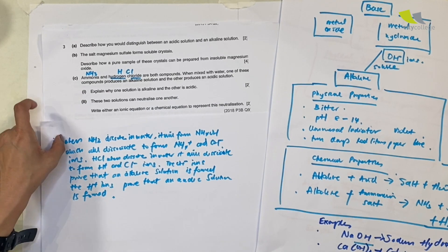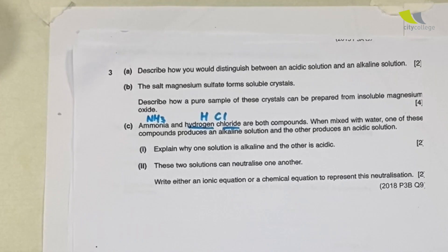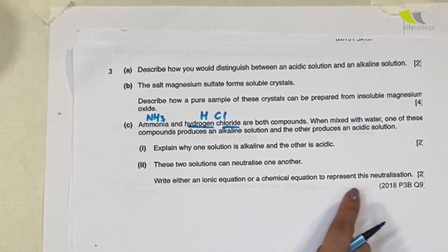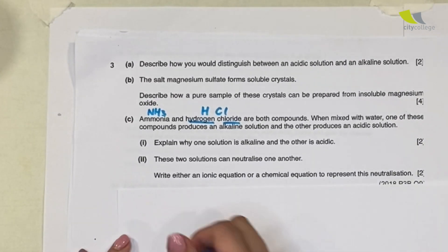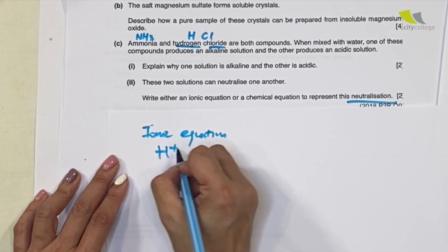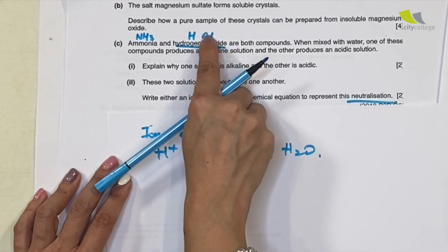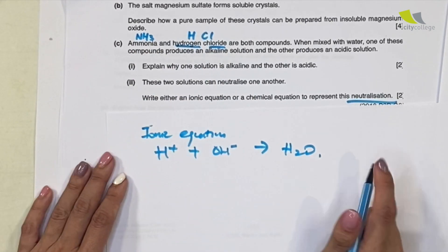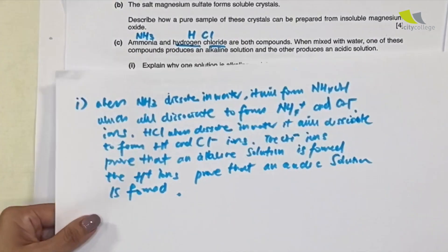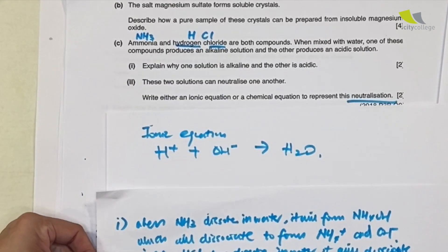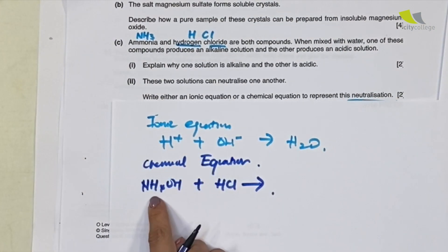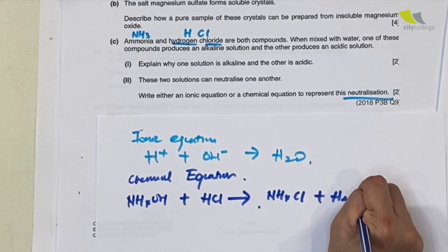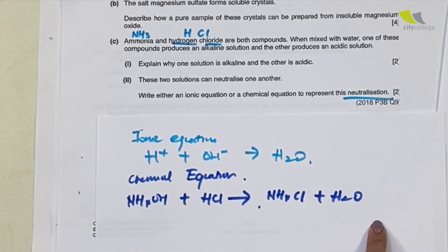These two solutions can neutralize one another. For the ionic equation: H⁺ + OH⁻ → H₂O. For the chemical equation: NH₄OH + HCl → NH₄Cl + H₂O. Make sure it is balanced — this equation is balanced and earns full two marks.